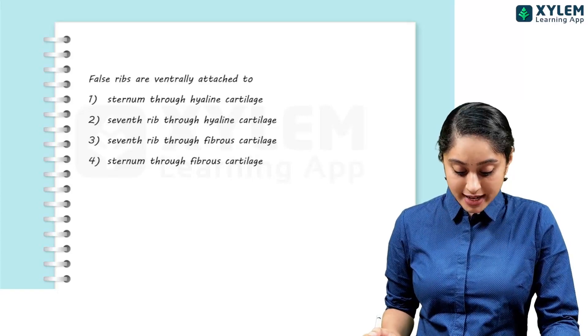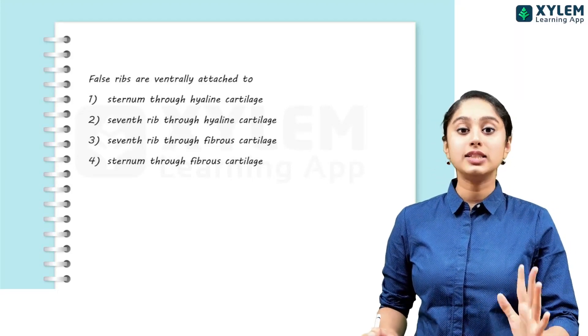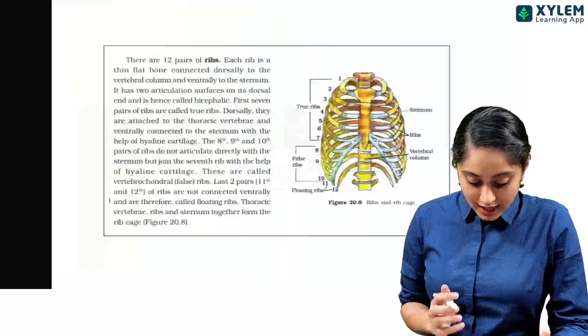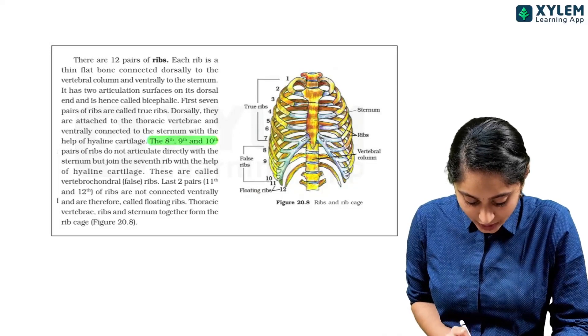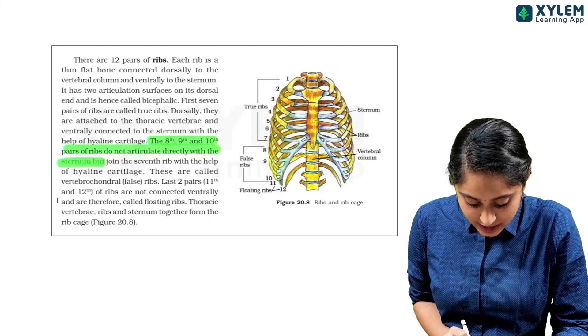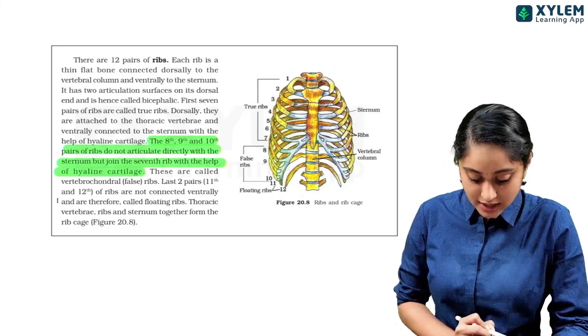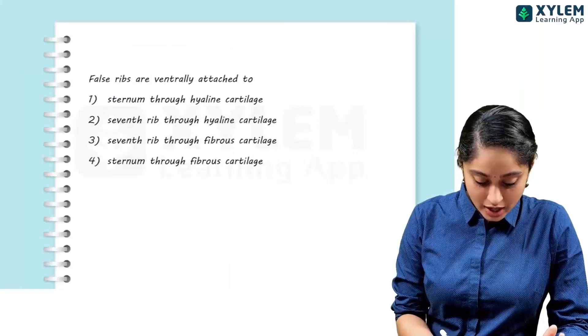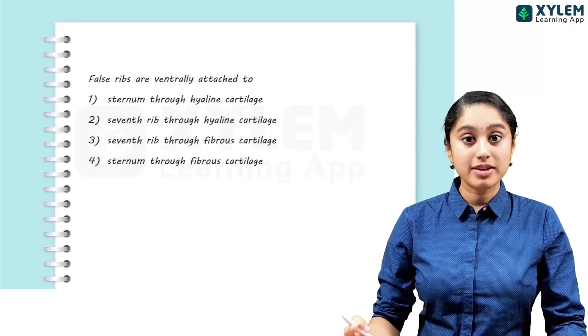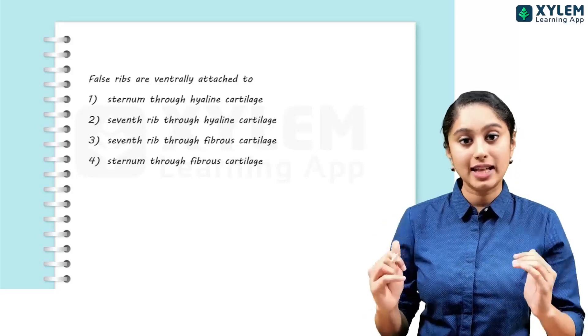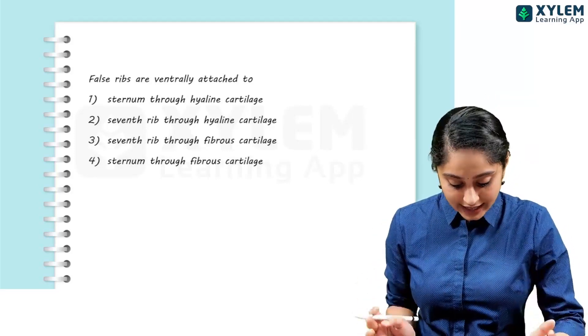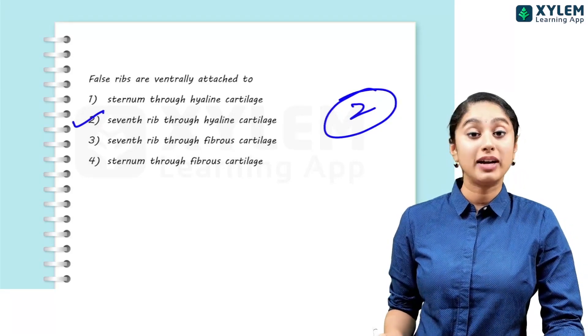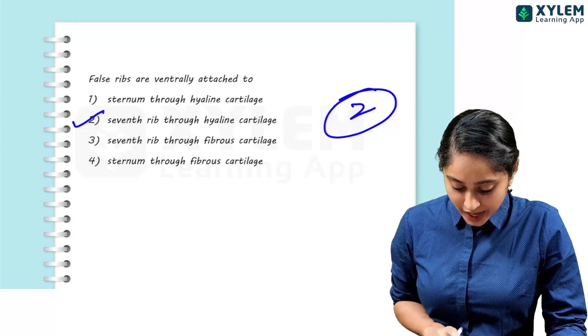False ribs are ventrally attached to - now look, the 8th, 9th, 10th rib, it is not directly attached to the sternum, but the 7th rib on the hyaline cartilage is attached. This is the last - so first 7 pairs directly attached to the sternum. After that, the rest 3 are not directly attached to the sternum, so they attach to the 7th rib through a hyaline cartilage. Directly, my answer is 2.